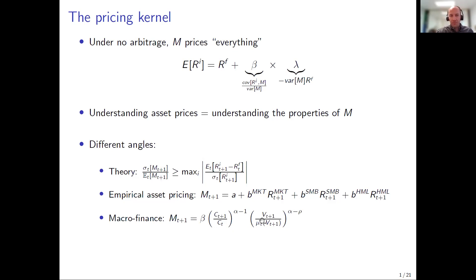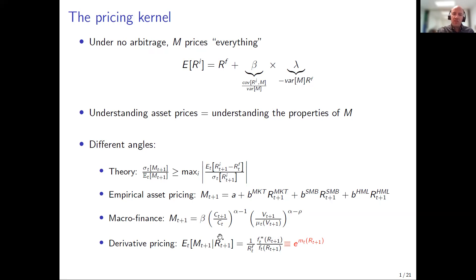The final angle — the one most of you will be most familiar with — is the derivatives angle, which looks at the pricing kernel's projection onto returns. In this case we typically express it as the ratio of option-implied probabilities to real-world probabilities. What this measures is the expected pricing kernel conditional on the future return realization and on investors' information set at time t. We're projecting down a multivariate pricing kernel and asking how it varies as a function of returns.